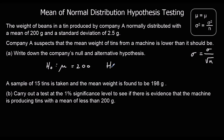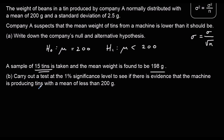The alternative hypothesis is that the mean is lower, because they think it's lower than 200, so the mean is less than 200 grams. We've got a sample of 15 tins taken, and the mean weight for the sample is 198.